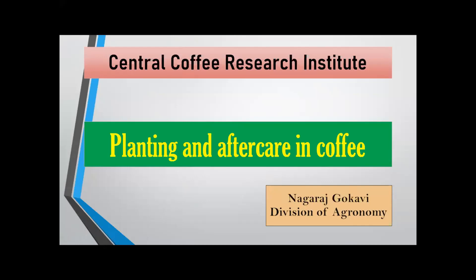I am going to share a few important things on planting and aftercare in coffee. Coffee is an important plantation crop and it is perennial in nature. Under standard management conditions, Arabica coffee can be economically productive after 30 to 40 years, while Robusta coffee is economically productive for 60 to 70 years. Hence, the vigor and health of establishment of coffee plantations is very much essential in order to maintain their longevity.